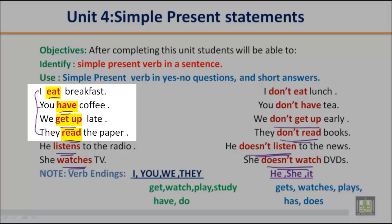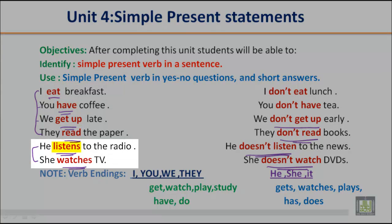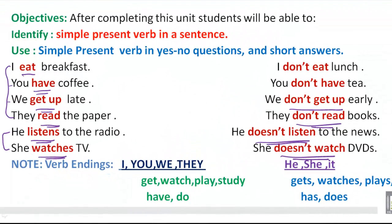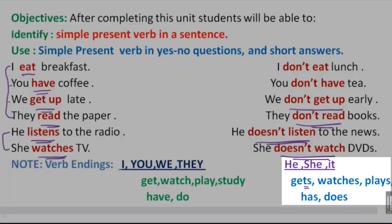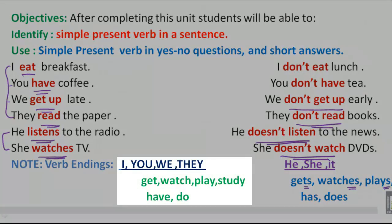But if you look at the subjects he and she, and the verbs here — 'listens' and 'watches' — we add -s or -es to the verb. So with he, she, and it, we add -s or -es at the end of the verb. For example: gets, watches, plays. With I, you, we, and they, we do not add -s.